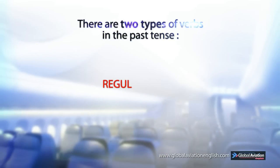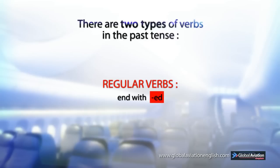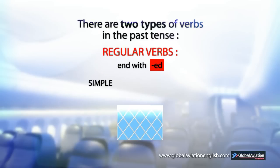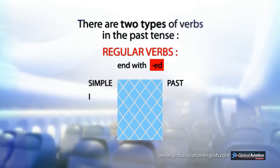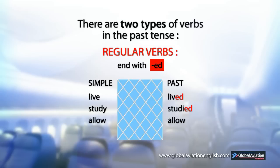Regular verbs end with ED. Simple past examples: live → lived, study → studied, allow → allowed, play → played.